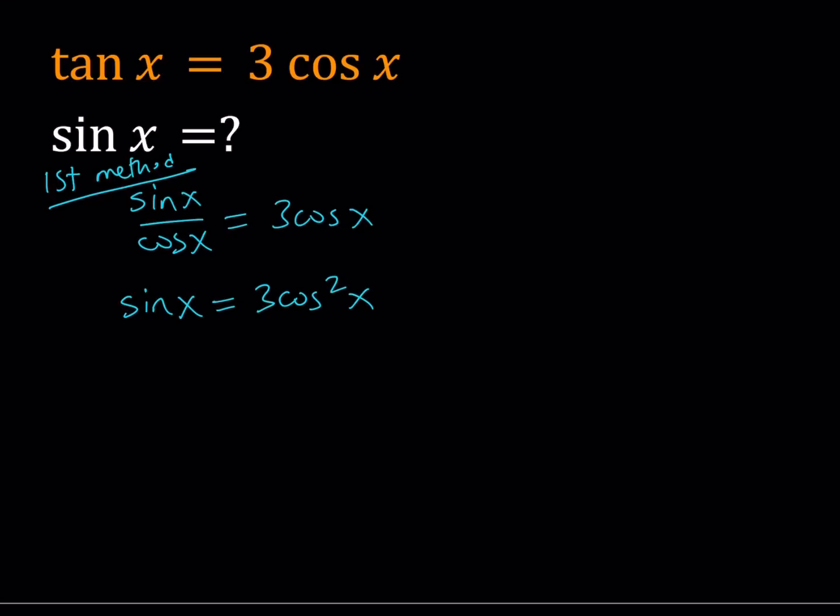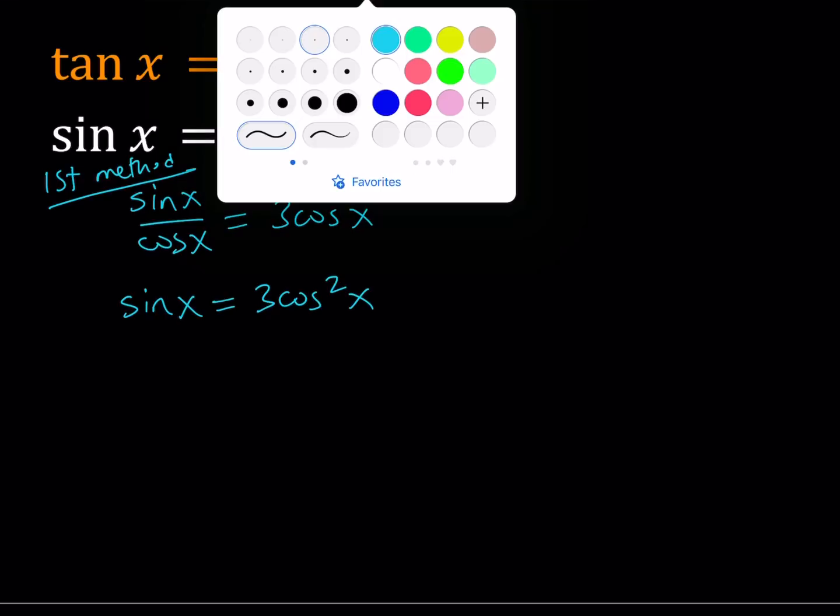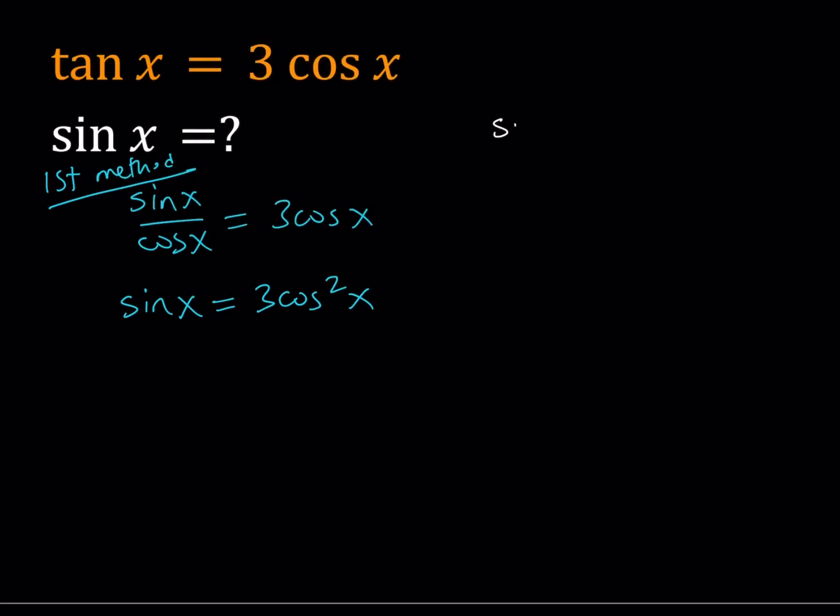Now, this equation can be handled by using the famous Pythagorean theorem or the formula or the identity. But that formula is very important in trigonometry. If you're dealing with trigonometry, you definitely have to know this. That sine squared x plus cosine squared x is always equal to 1. Now here, this allows us to write cosine squared in terms of sine squared. So cosine squared equals 1 minus sine squared. And now we can do the substitution here.